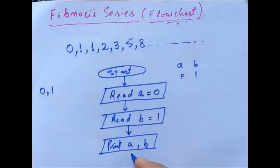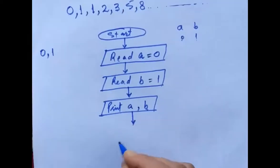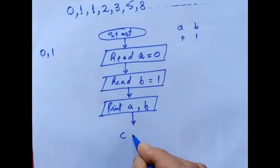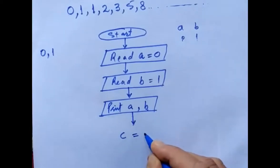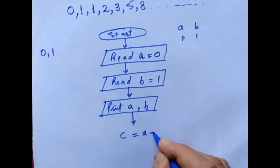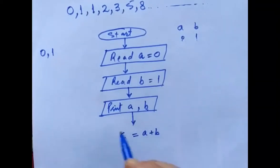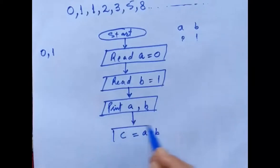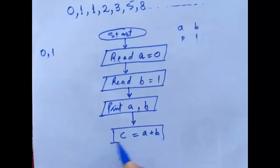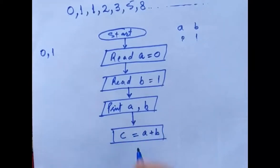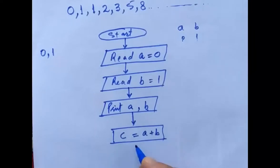After that I will declare another variable c, in which I will assign the sum of a and b: c equals a plus b. I have written c equals a plus b — I have not printed it yet, just calculated it.